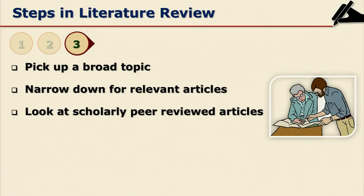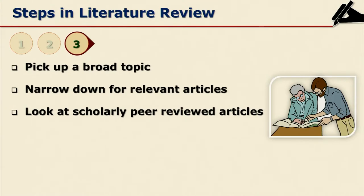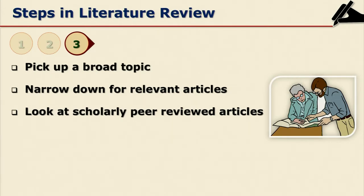After you narrow down to relevant articles, the next step is to look at scholarly peer-reviewed articles. For example, search in IEEE documents for scholarly articles on cloud computing and mobile learning, or mobile learning and blog mining. Peer-reviewed journals are very important and they are primary sources of information, and hence this step in literature review is very crucial.